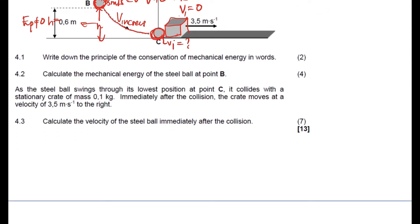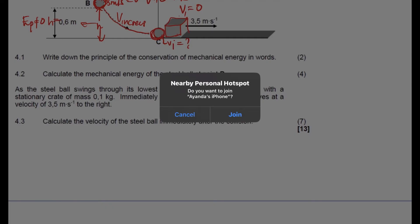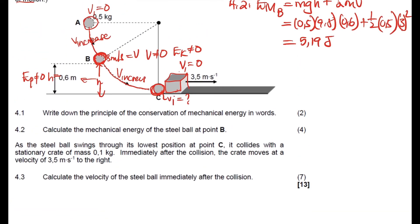As the steel ball swings through its lowest position C, it collides with a stationary crate. The crate has a mass of 0.1 kg and an initial velocity of zero. Immediately after the collision, the crate moves with a velocity of 3.5 meters per second to the right.